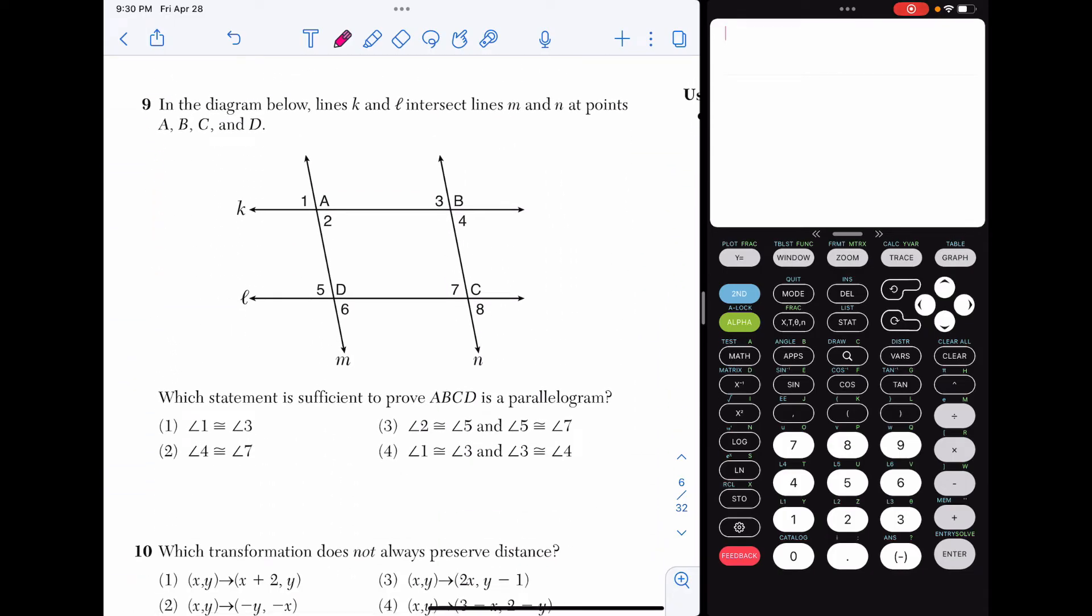Alright, number nine. In the diagram below, lines K and L intersect lines M and N at points A, B, C, and D. In this problem, we are asked to figure out what statement is sufficient to prove ABCD is a parallelogram. So when we're looking at ABCD in the middle here, okay, in order for it to be a parallelogram, we're working with the angles in this problem. In a parallelogram, the opposite angles are congruent to one another and the consecutive angles are supplementary.